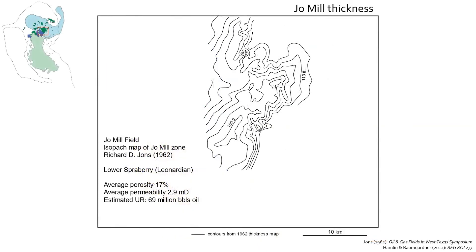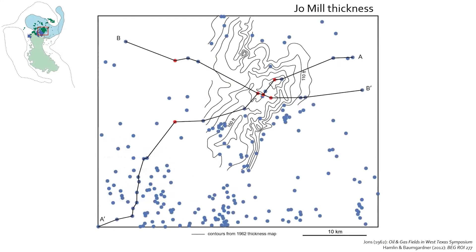Here's a thickness map of the Jomil unit within the field. Here are the locations of wells and cores we've used in this research. Blue dots are wells with digital logs, red dots are wells with cores. We've described and interpreted all these cores, but we're only discussing a couple of them today, which are located in the heart of the field where the two cross-sections AA' and BB' intersect.